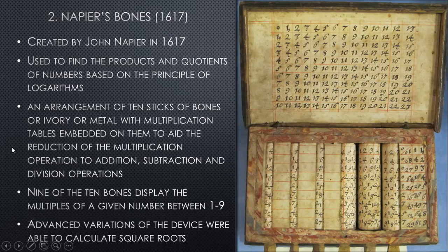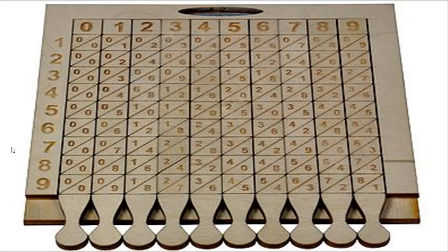This is a clearer picture of Napier's Bones. If you look closely, you'll see the numbered panel one to nine and you can manipulate the table. If you observe, two times one gives you two, and so on up until nine times nine gives you 81.